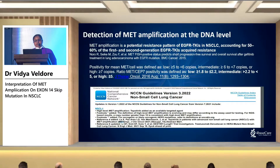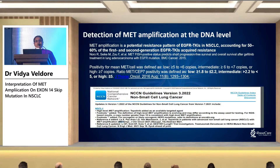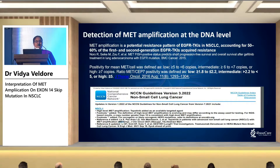Today's topic is primarily to discuss exon 14 skipping mutations and MET amplifications — how we do it, what technology is approved, what other technologies are available, and how we can use alternatives when one technology is not available. Before moving into exon 14 skipping, amplification is pretty straightforward. FISH remains the gold standard, similar to HER2 amplification. A copy number ratio less than 2.2 is considered low, greater than 1.8 to 2.25 intermediate, and greater than 5 is considered amplified.